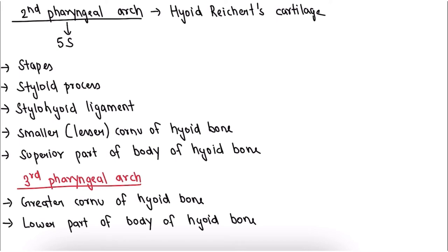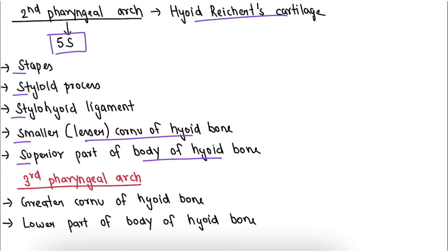Now coming to the structures derived from the second pharyngeal arch. The second pharyngeal arch is also called Reichert's cartilage and can be remembered by five S's: stapes, styloid process, stylohyoid ligament, smaller (lesser) cornu of hyoid bone, and superior part of body of hyoid bone. These all are derived from the second pharyngeal arch.